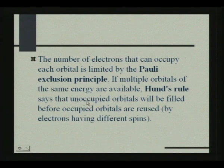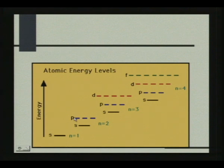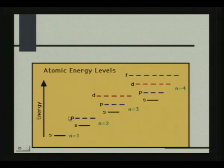Hund's rule of maximum multiplicity states that if multiple orbitals of the same energy are available, unoccupied orbitals will be filled before occupied orbitals are reused. For example, in n=2, there are three p orbitals: px, py, pz. If three electrons are available, the first enters px, the second py, the third pz. It would be wrong to place two electrons in px before filling py. This is Hund's rule of maximum multiplicity.